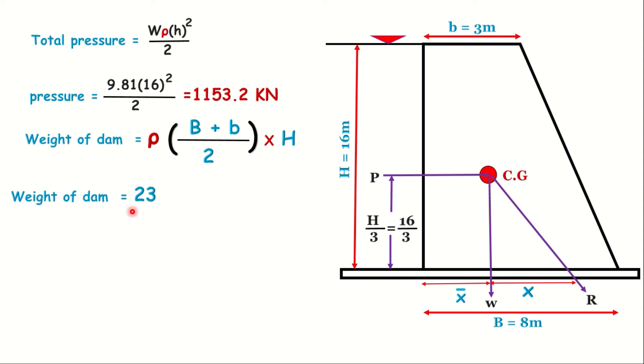Volume = (8 + 3)/2 × 16 × 1. Weight W = 23 × (8 + 3)/2 × 16 = 2024 kN.